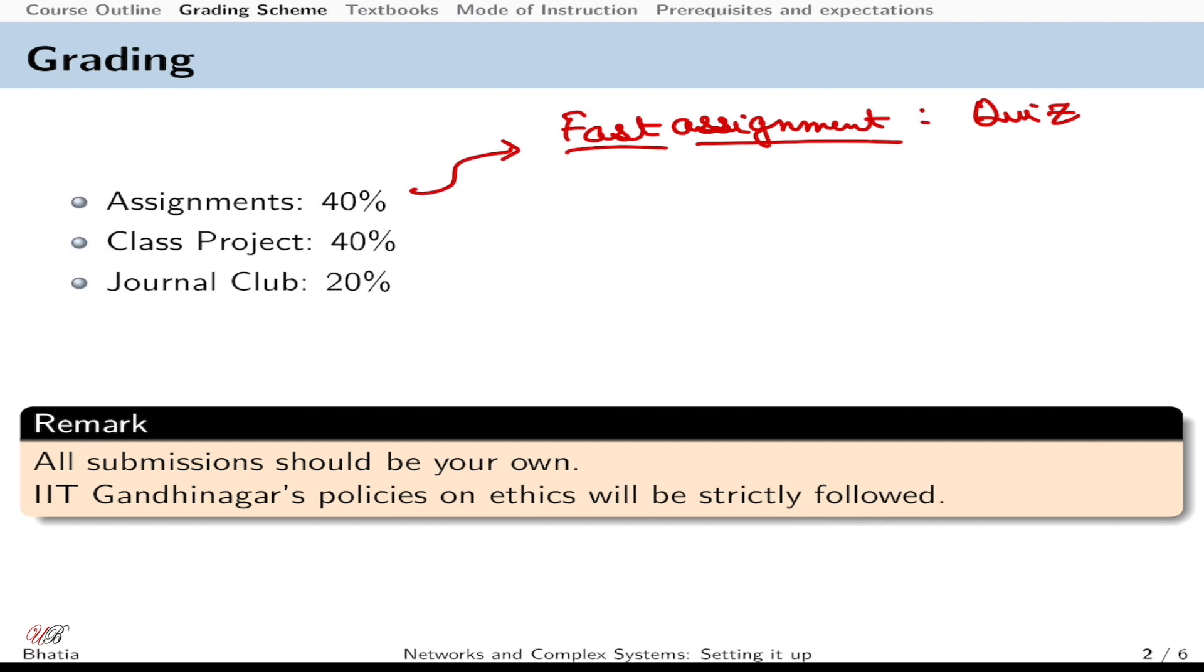For example, in the present world, that example could be: can you model using network science at what rate we are going to flatten the curve if we follow quarantine and testing measures? The biggest difference between graph theory and network science is we will be learning a lot of things empirically, observing data, and we have to demonstrate our learning on real data.